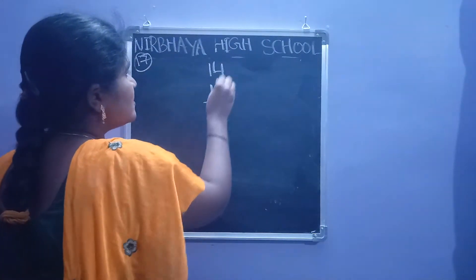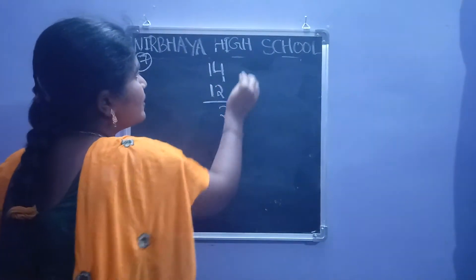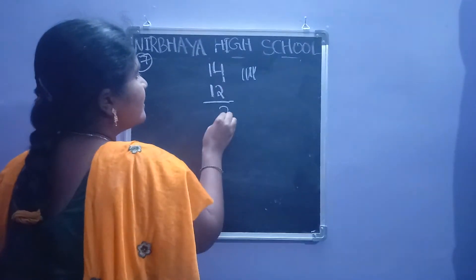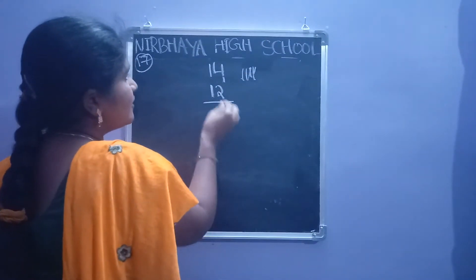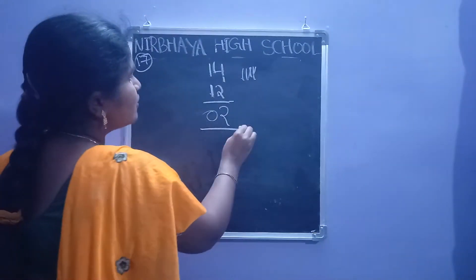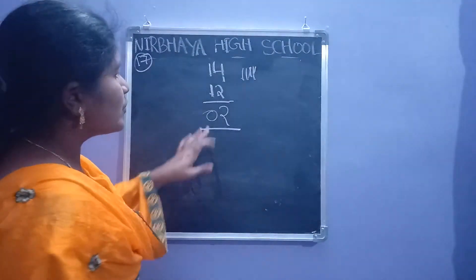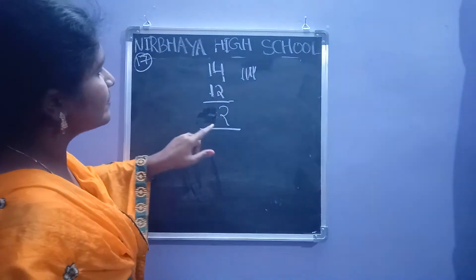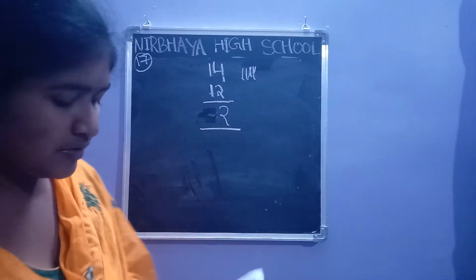Do the subtraction, children. 4 minus 2 equals 2. Draw 4 lines, remove 2 lines. Remaining are 1, 2. So write 2. Then 1 minus 1 means 0 — no value. So remaining are 2 cookies. 2 cookies are remaining.